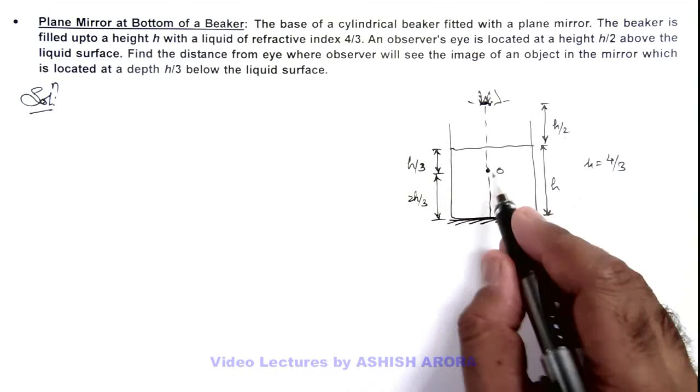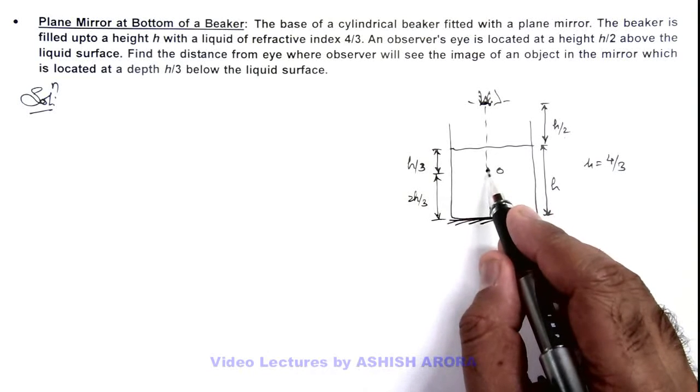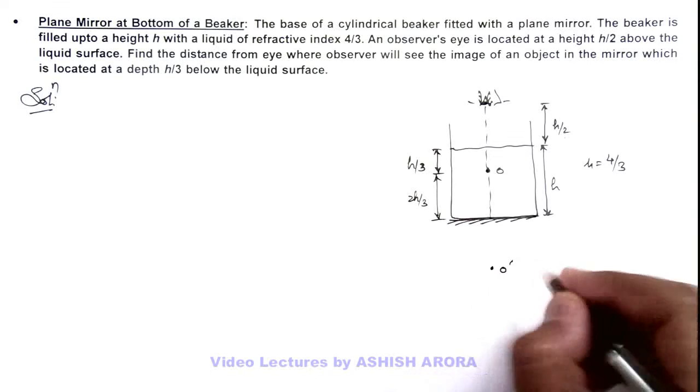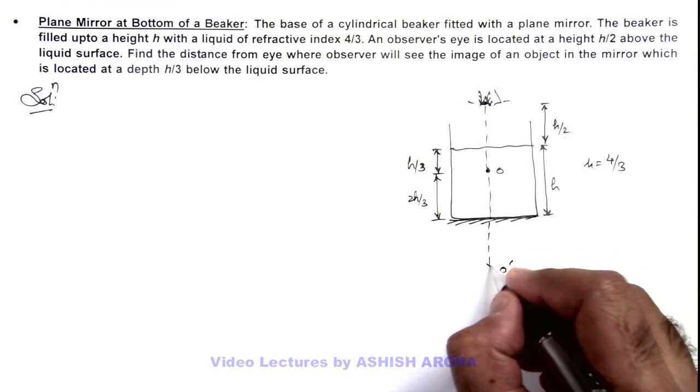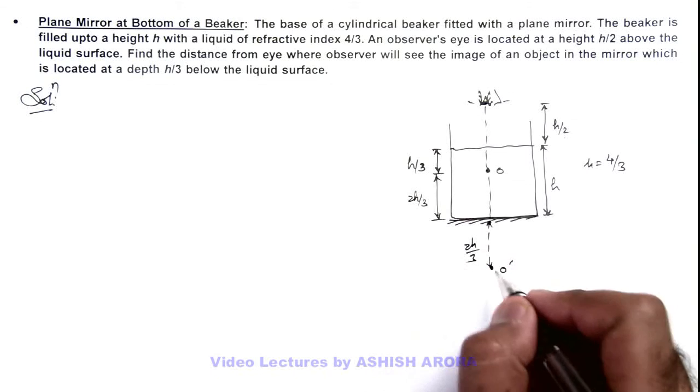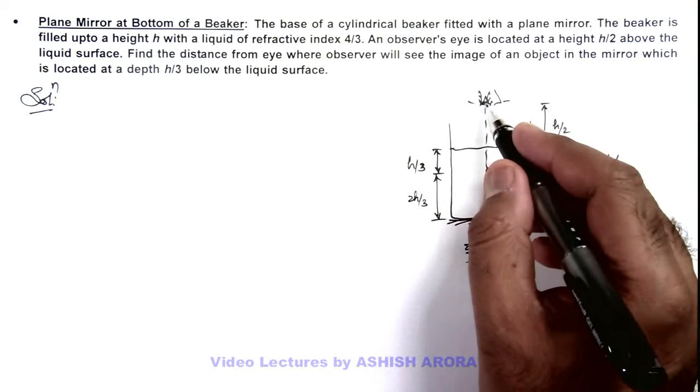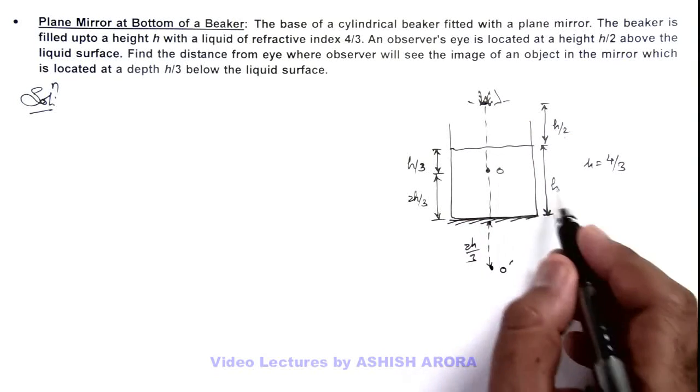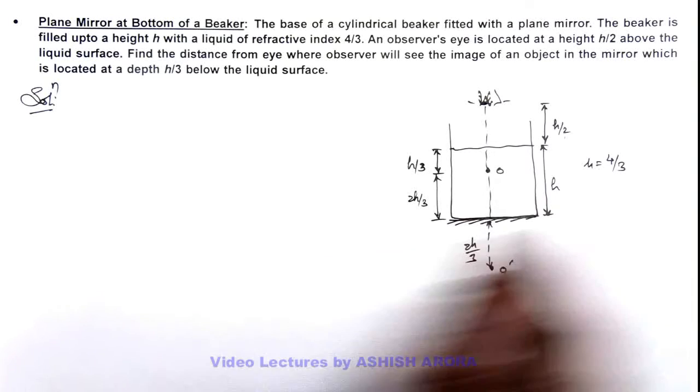When light rays from this object are reflected from the base, an image will be produced at O' which is at a depth 2h/3 below the mirror. For this object, when this eye will look into it, it is located at a depth of h plus 2h/3, so here we can write.